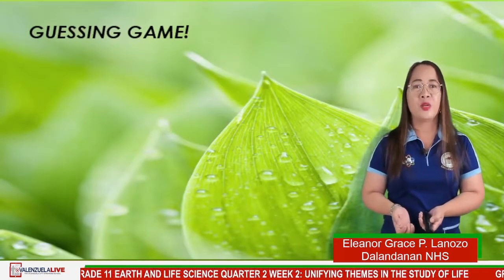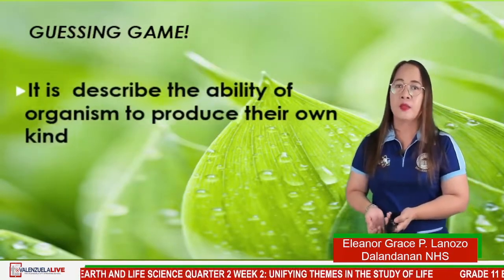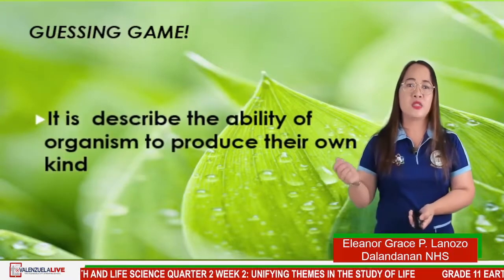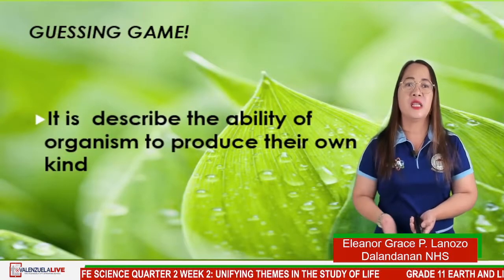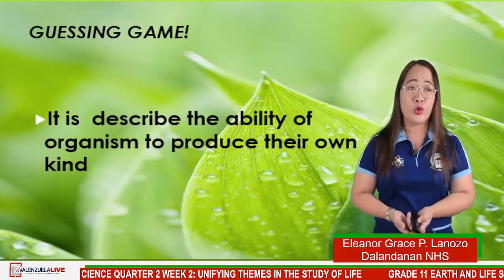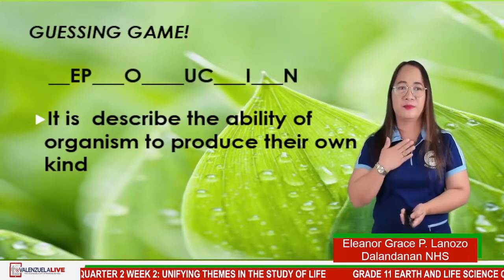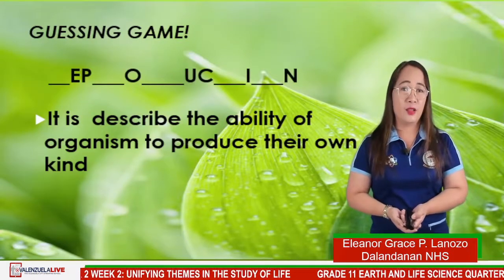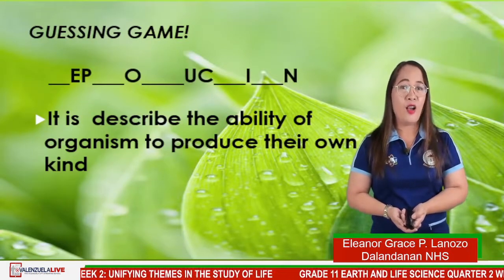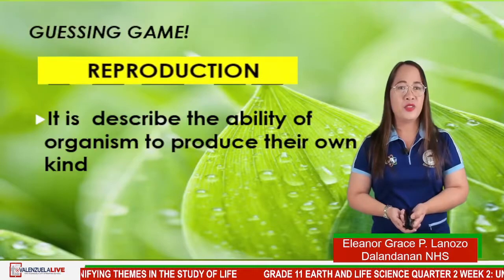We have here number 3 for the guessing game: it describes the ability of an organism to produce offspring of their own kind. The answer is reproduction.